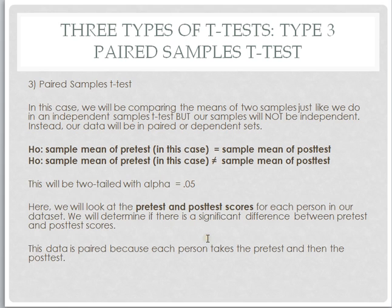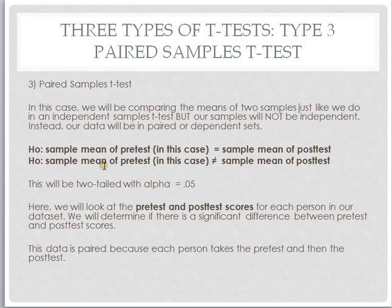Those would be paired scores. In this case, we're trying to figure out — and there's a typo, that should say H_A — we're trying to figure out if the sample mean of our pre-test group is not really different from the sample mean of our post-test. And our research hypothesis — again that should be H_A — is that the sample mean of our pre-test is actually significantly different than the sample mean of our post-test. Again, two-tailed and alpha is 0.05.